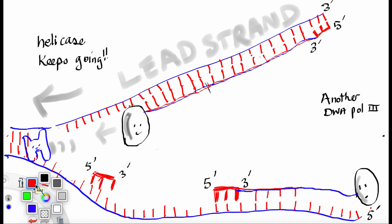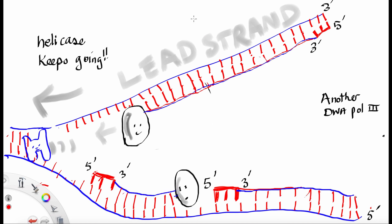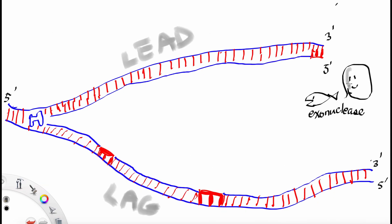Meanwhile, DNA polymerase 3 on the bottom strand has to move in the opposite direction. And therefore, this strand is known as the lag strand. Once again, DNA polymerase will move in the 5' to 3' direction.